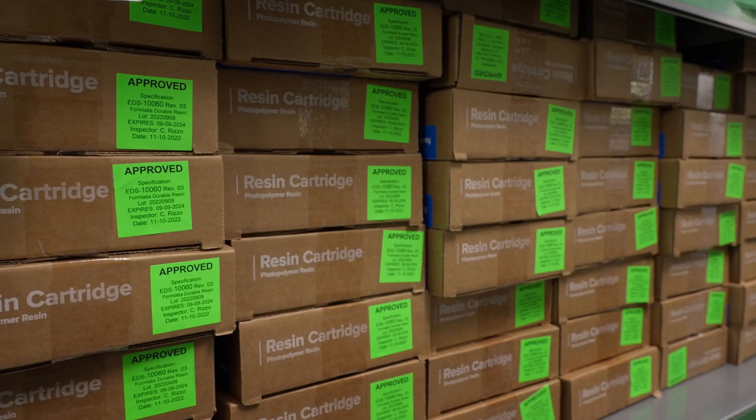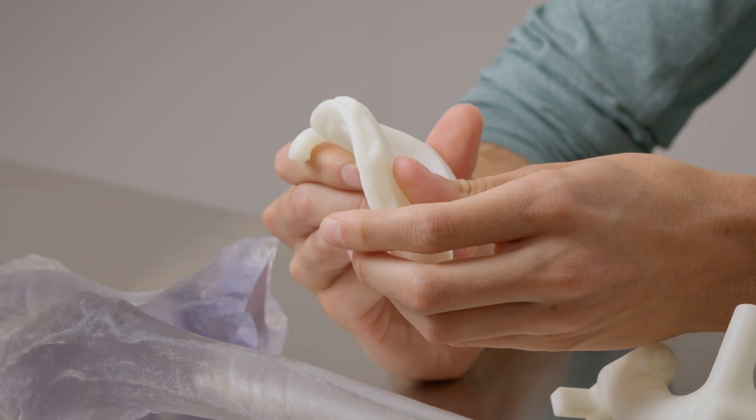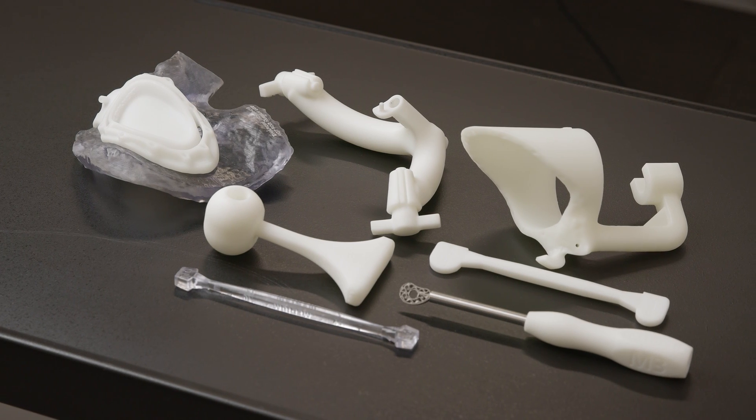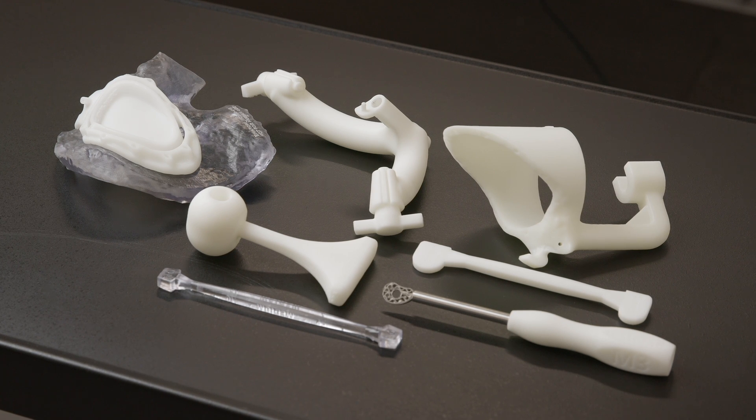The reason that we like Formlabs resin is its intraoperative characteristics. It's tough. It allows us to really print what we want without too much concern about material thinning or breaking. Things like impactors, cutting tools, drilling guides—if we can't provide something in metal, odds are that we're able to provide it in resin and get the function that we need.